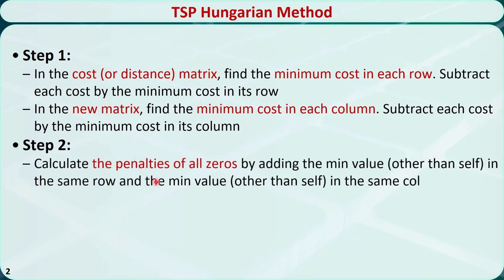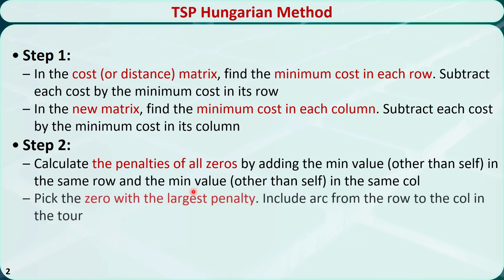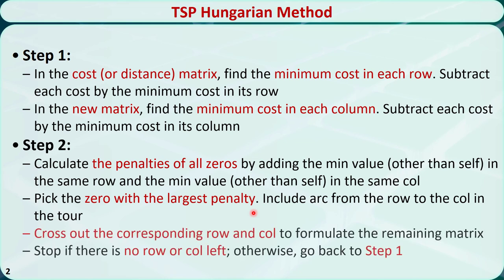Step 2: calculate the penalties of all zeros by adding the minimum value other than itself in the same row and the minimum value other than itself in the same column. Pick the zero with the largest penalty. Include the arc from the row to the column in the tour. Cross out the corresponding row and column to formulate the remaining matrix. Stop if there is no row or column left; otherwise, go back to step 1.